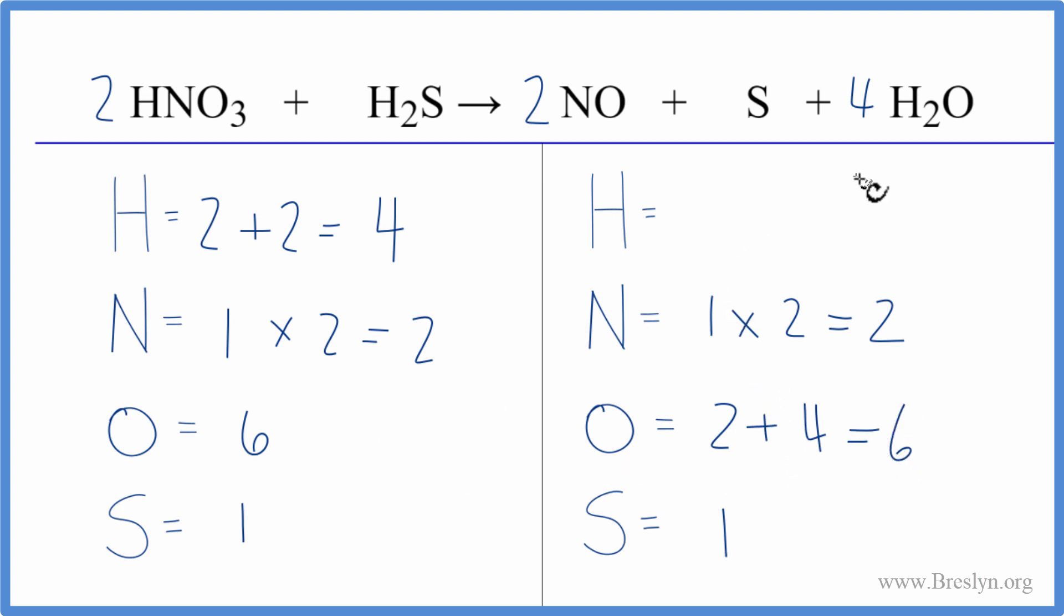Now we need to update the hydrogens. We have two times four. That gives us eight hydrogen atoms. So how do we fix the hydrogens? Because we have hydrogens here and here.